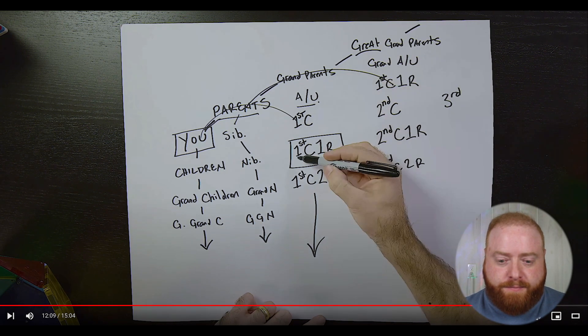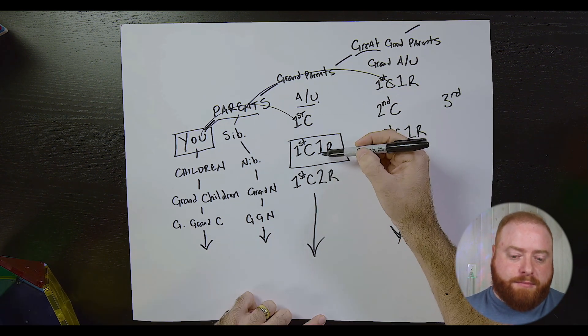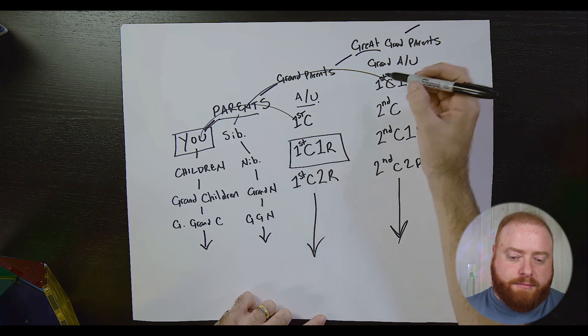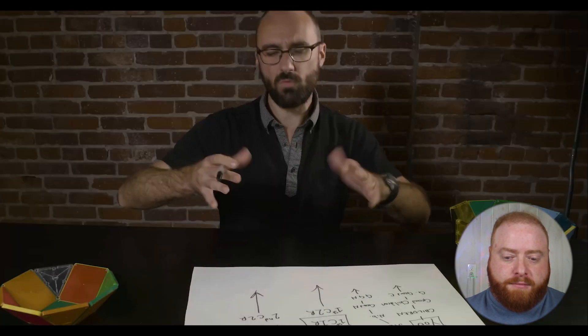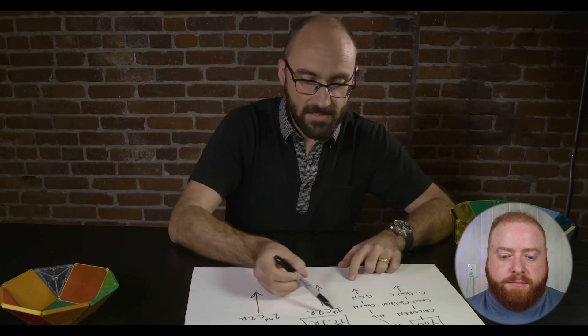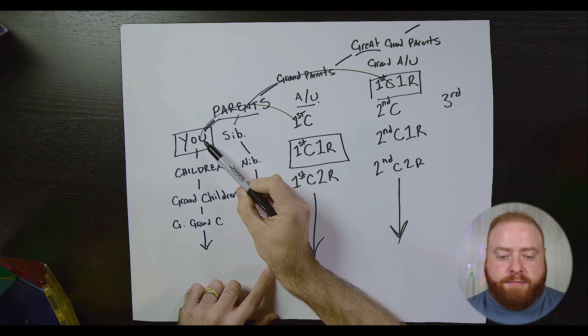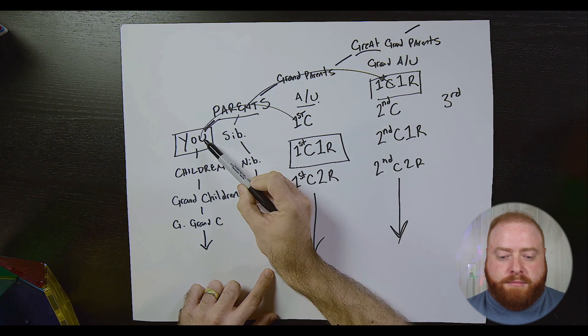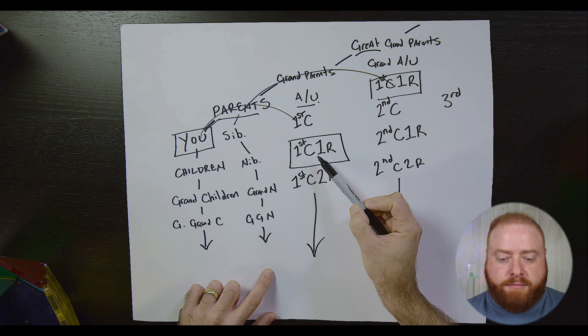This is where you will see that first cousins once removed who are your cousin's children, and first cousins once removed who are your parents' cousins, have the same or roughly the same genetic similarity to you — about 12.5% or so.